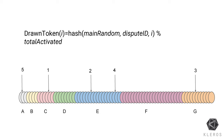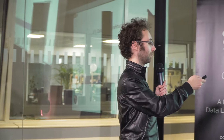We have parties A through G which have deposited some tokens. We want five jurors, so we draw five tokens: A, C, E, and G are drawn — and E is drawn twice. You still sometimes need to draw people multiple times, otherwise they'll split into multiple accounts to get more chances. But in a large juror pool, being drawn multiple times is quite unlikely.